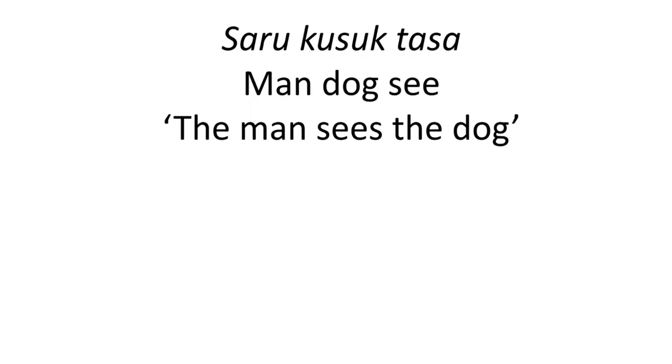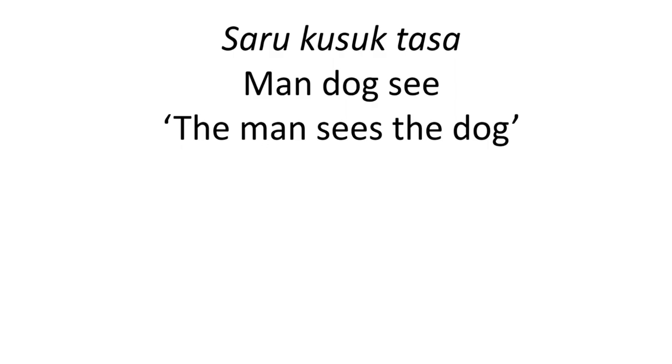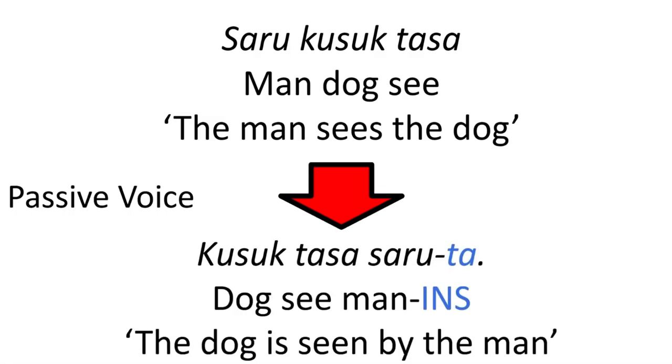Let's take the sentence, the man sees the dog. What if, in the proto-language, our speakers decide to use a passive construction? Maybe in this passive construction, for focus reasons, the patient, which is now the subject, will be moved to the front of the verb, while the agent, which is now an oblique or an adpositional phrase, gets placed after the verb and is marked in an instrumental case, which is essentially the equivalent to the English preposition by. Now we have the sentence, the dog is seen by the man.